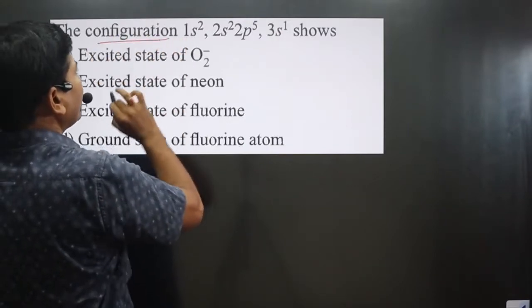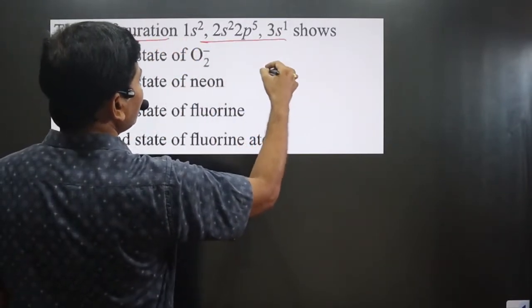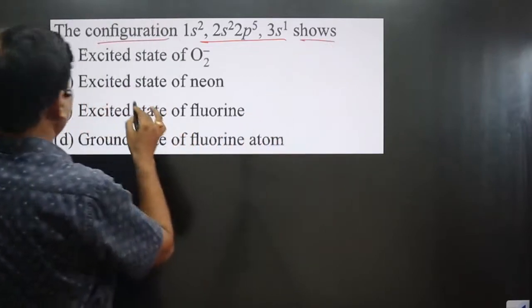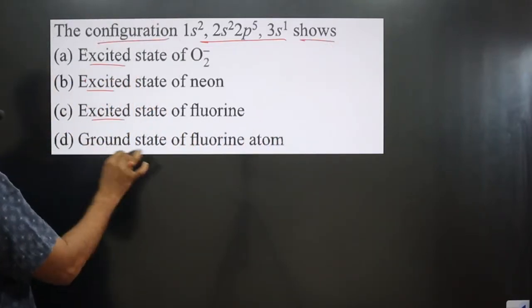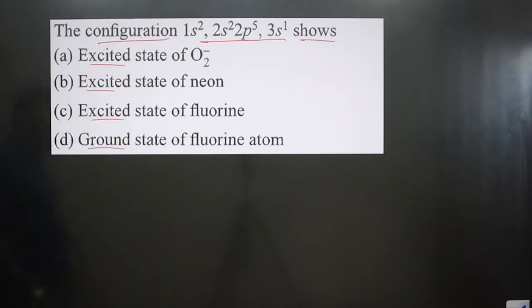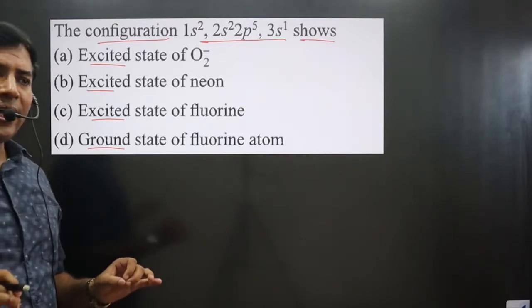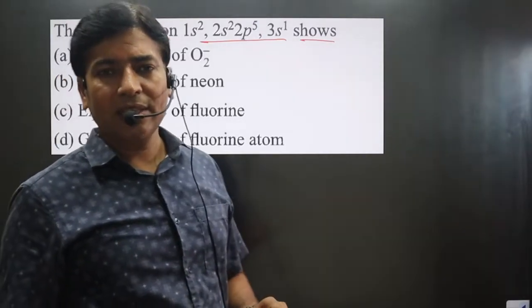The question says the electronic configuration 1s², 2s²2p⁵, 3s¹ is given and asks whether this shows an excited state or ground state. We need to identify whether it's excited or ground state.